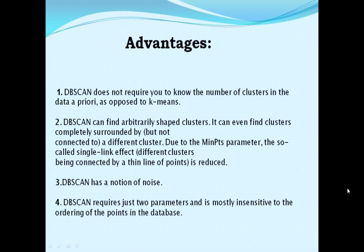Advantages of DBSCAN: First, DBSCAN doesn't require you to know the number of clusters in the data a priori, as opposed to k-means. Second, DBSCAN can find arbitrarily shaped clusters — it can even find clusters completely surrounded by a different cluster. Third, due to the min points parameter, the so-called single-link effect is reduced. Fourth, DBSCAN has a notion of noise. Fifth, DBSCAN requires just two parameters: epsilon distance and minimum points, and is mostly insensitive to the ordering of points in the database.